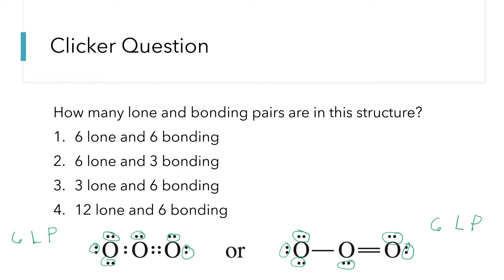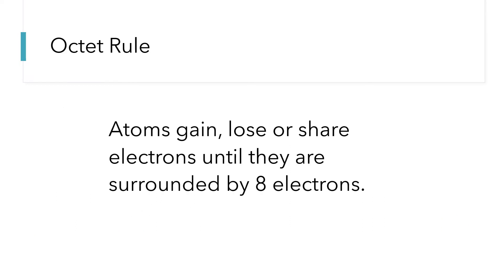Now let's mark bonding pairs. On the left-hand structure, these two dots represent one bonding pair, and where there are four electrons that's two bonding pairs, so one plus two gives us three bonding pairs. On the right-hand structure using lines, one line represents one bonding pair and the double line represents two bonding pairs — one plus two again gives us three bonding pairs. So the answer is six lone pairs and three bonding pairs.